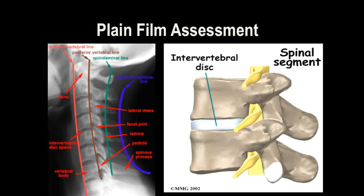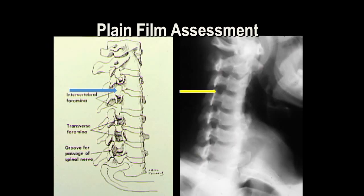That covers the main aspects of cervical spine alignment assessment, which should be the first thing you look at on a cervical spine radiograph. On the right you have a schematic showing the two vertebral bodies, the intervertebral disc, and the nerve roots coming from the neural foramina, which we also assess.